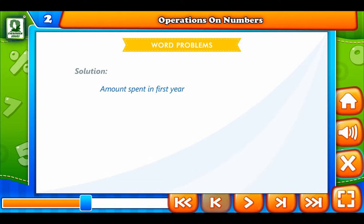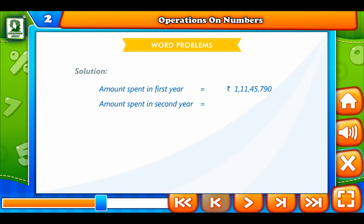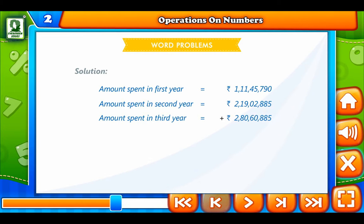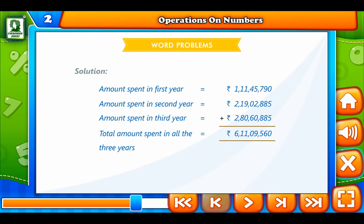Solution. Amount spent in the first year is 1 crore 11 lakh 45,790. Amount spent in the second year is 2 crore 19 lakh 2,885. Amount spent in the third year is 2 crore 80 lakh 60,885. Therefore, total amount spent in all 3 years is 6 crore 11 lakh 9,560.